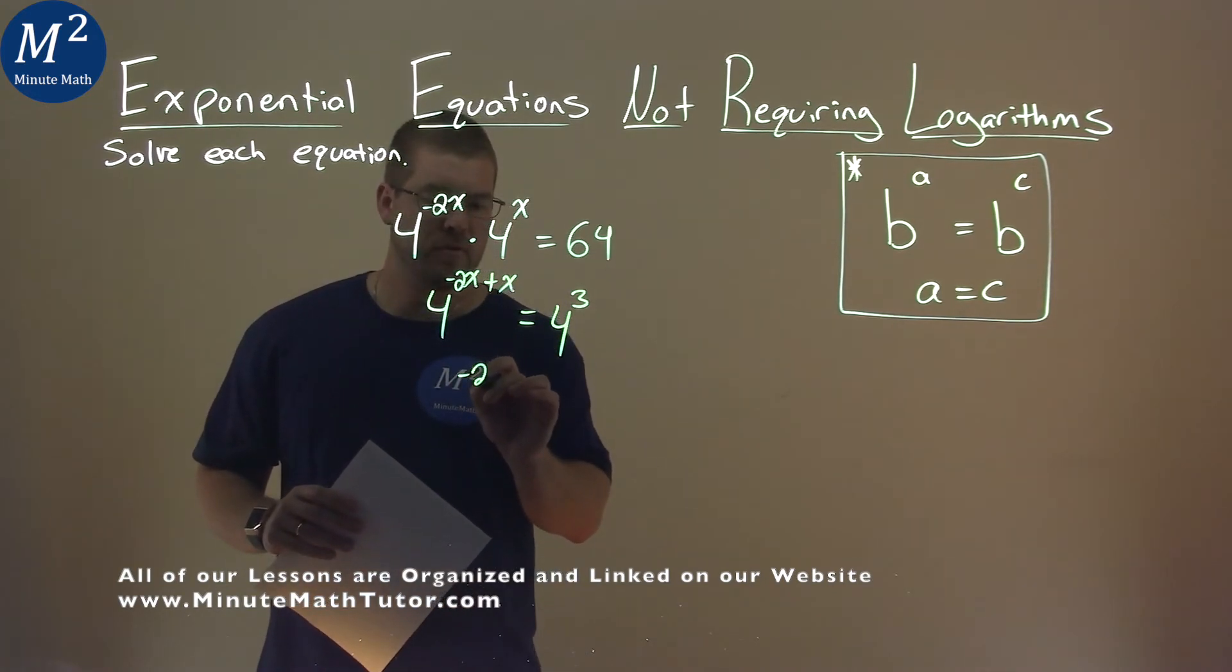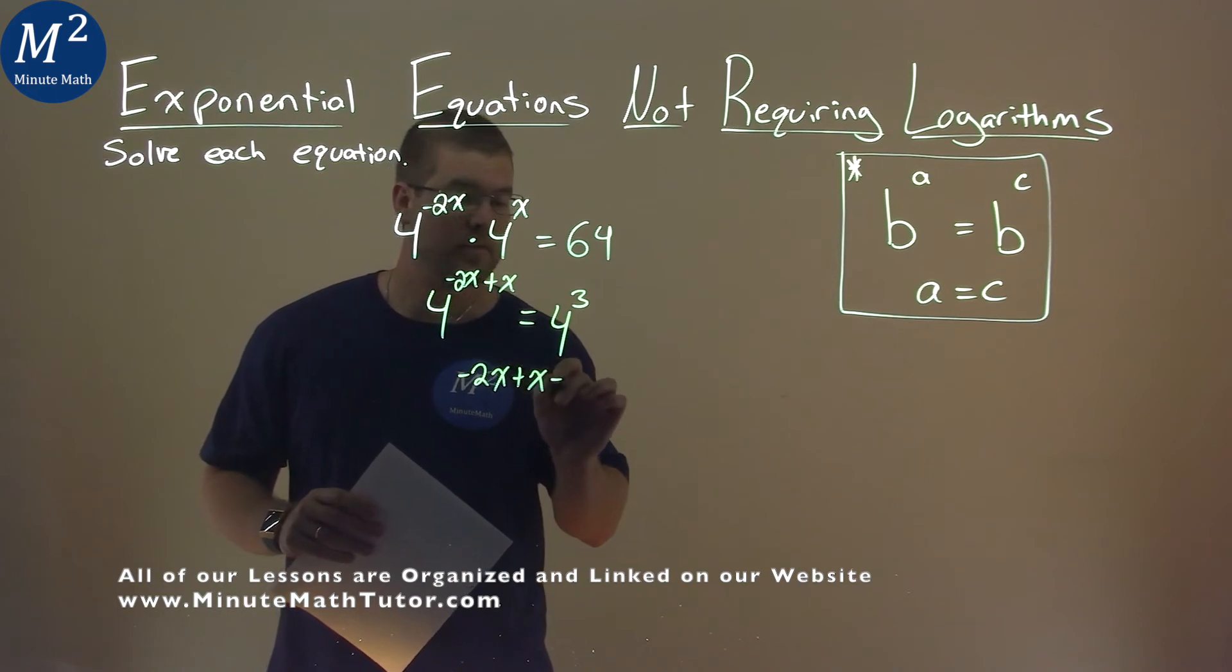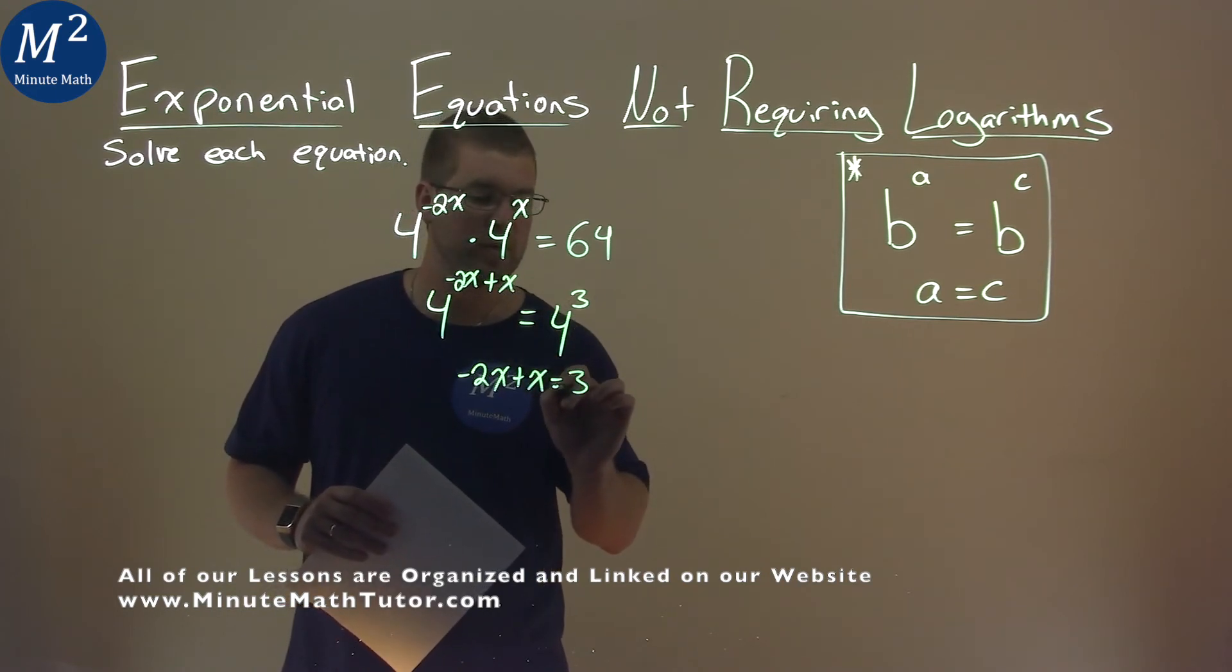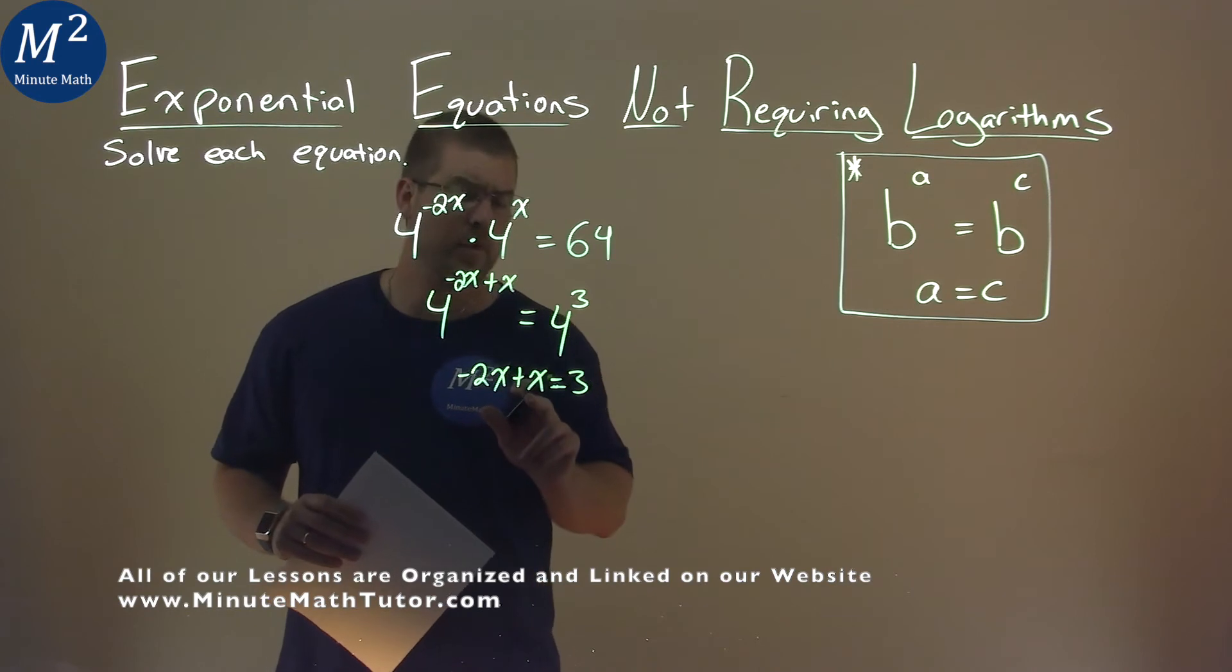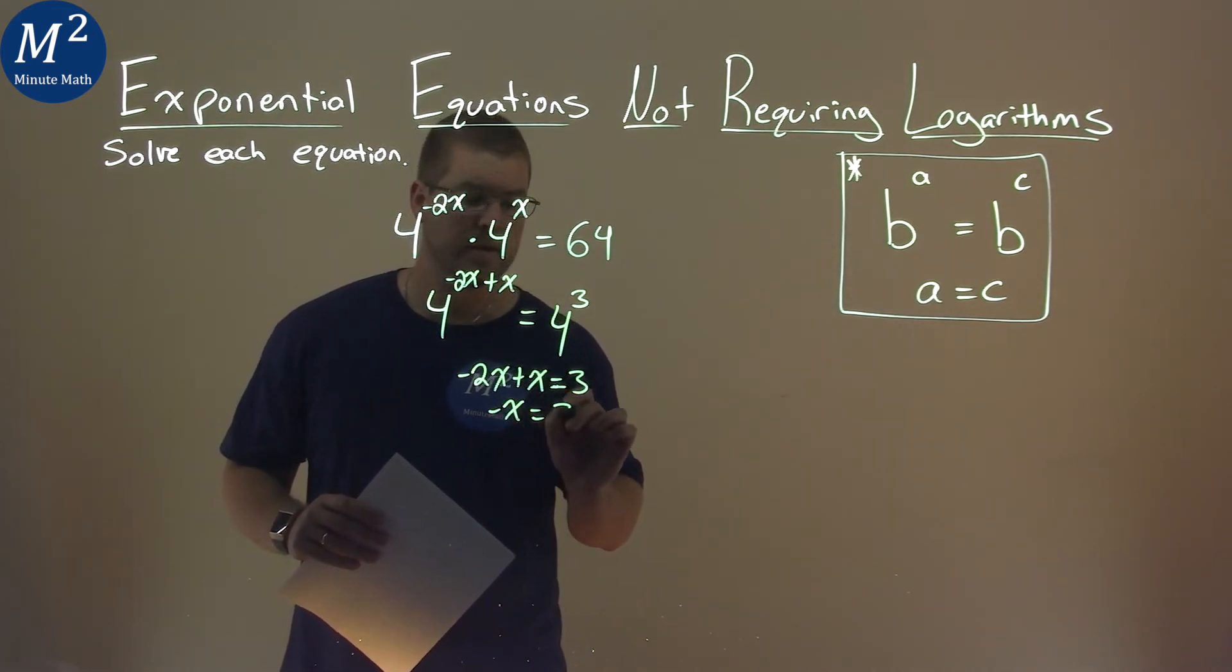So we have a negative 2x now plus an x on the left, and on the right is just a 3. Now, let's solve for x. Negative 2x plus 1x is negative 1x, and we have a 3.